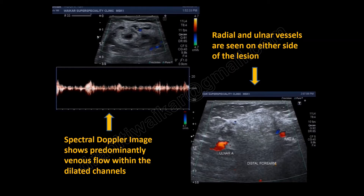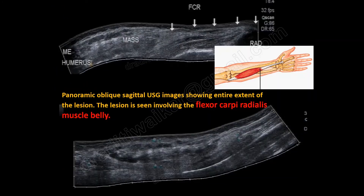Spectral Doppler image shows predominantly venous flow within these dilated channels, suggesting that this is a slow-flow venous malformation. So the diagnosis is more or less complete — it's a slow-flow venous malformation located deep to the superficial fascia.